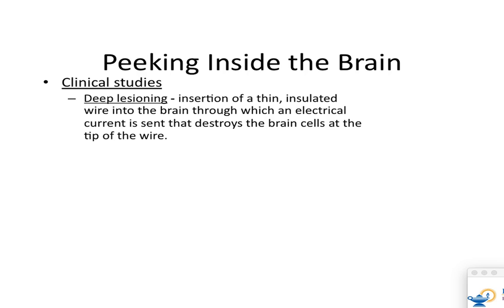Deep lesioning: you insert a thin wire into the brain where an electrical current starts burning a hole, destroying the part of the brain it's touching. You'll see this with people who have severe narcolepsy — people who fall asleep all the time and go straight into REM. They stick a metal wire into your brain and burn the part they think is responsible, though we're not 100% sure.